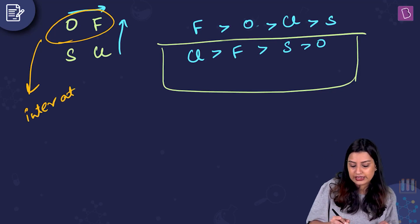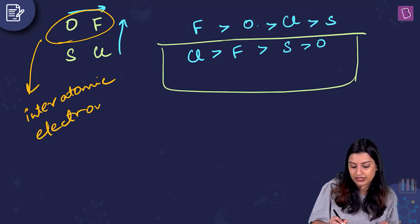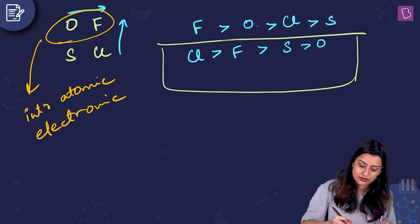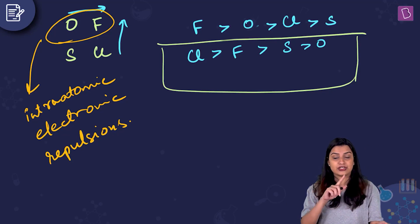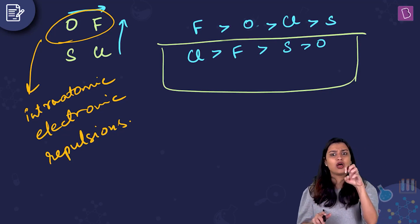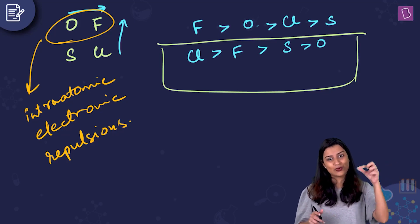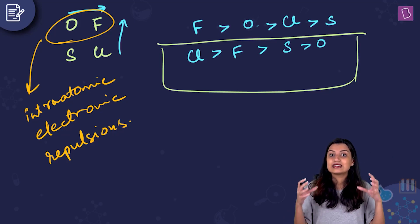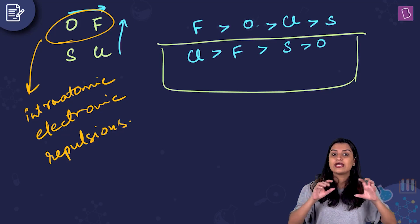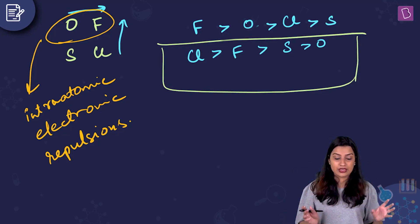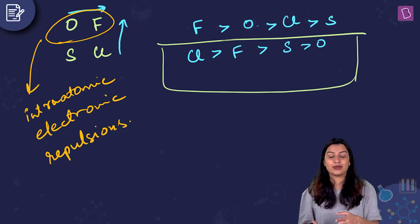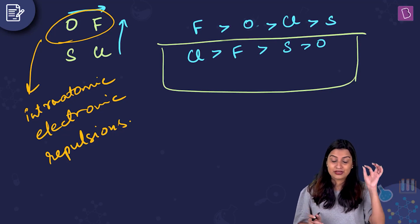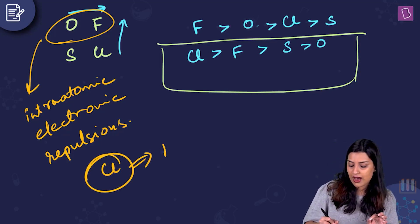The reason for this anomaly is atomic size. Oxygen and fluorine are very small atoms, so the incoming electron experiences significant intra-atomic electronic repulsion — the existing electrons are confined to a small volume, leaving little room to accommodate the new electron without strong repulsions. This reduces the electron affinity of O and F relative to S and Cl.